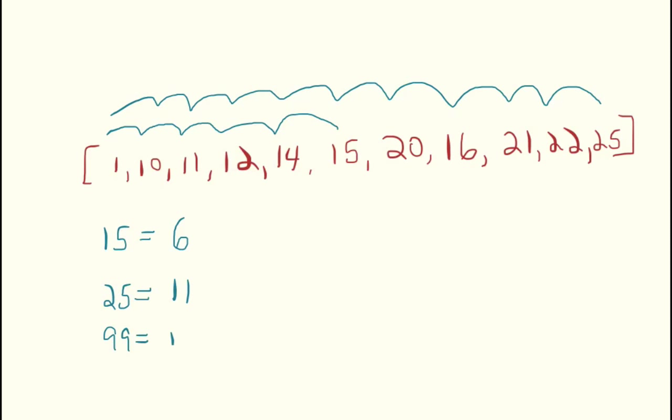And what if the element we're looking for wasn't even in the array? So say we had 99, it would be n, which is similar to 25 except in this case it's considered the worst case time complexity because the element isn't even in the array.